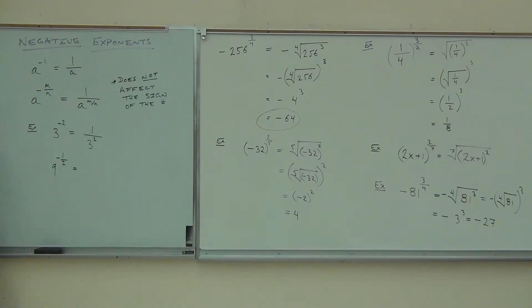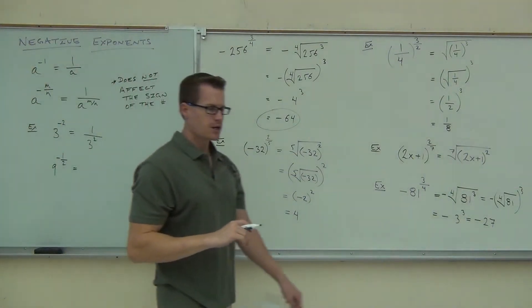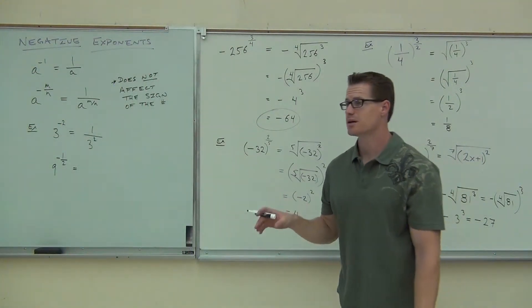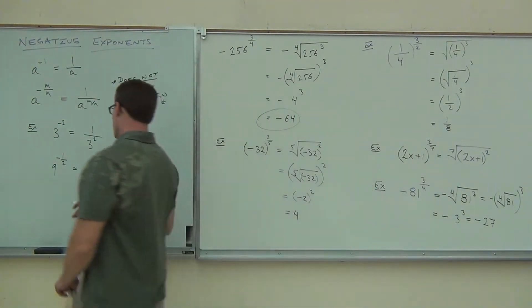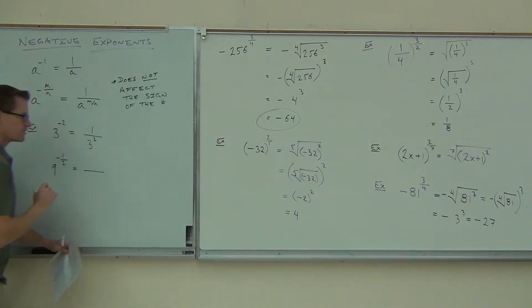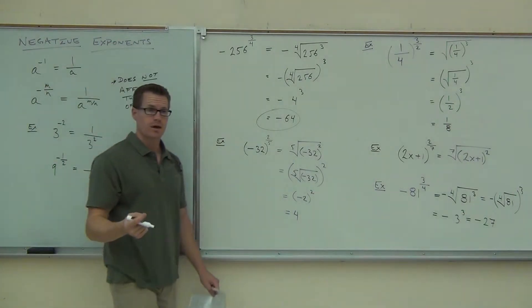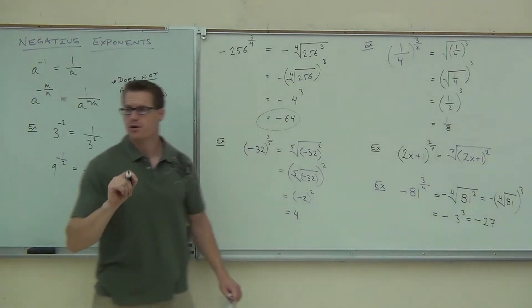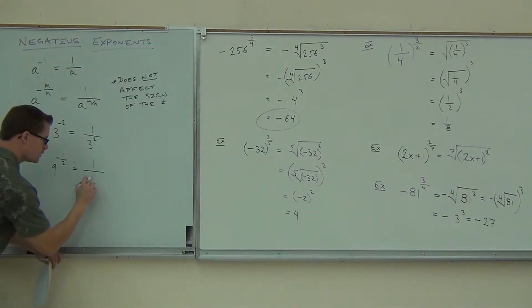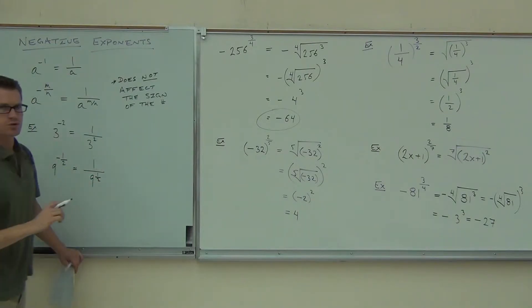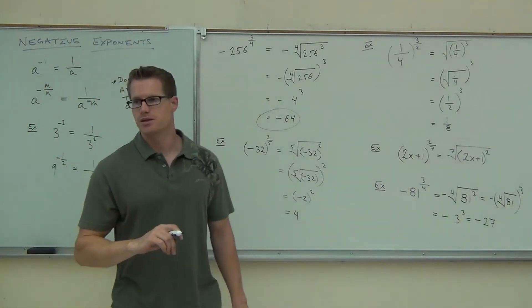How about that? How about 9 to the negative 1 half? Can we write that as a positive exponent? First, what's going to be on the numerator of our fraction here, ladies and gentlemen? 1. Good. Are you guys all still with me on this? Why do we have a 1 there? What's on the denominator of our fraction? Do we still have the 9? Yeah, so we're going to have a positive 1 half. We're going to change the exponent to a positive.